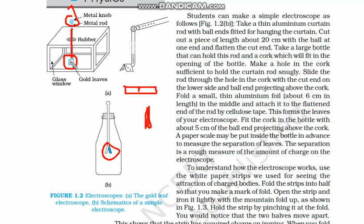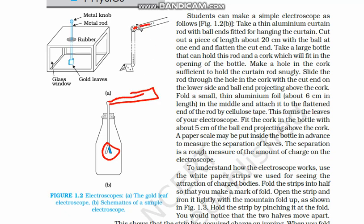There is a metal bob or wire at the top, and gold leaves or aluminium foil at the bottom. When a charged object touches the metal bob, charge is transferred. If there is a positive charge, it transfers to the bob and through the wire to both aluminium foils. Since both foils acquire positive charge, they repel each other and a gap is created between them, indicating the object was charged.